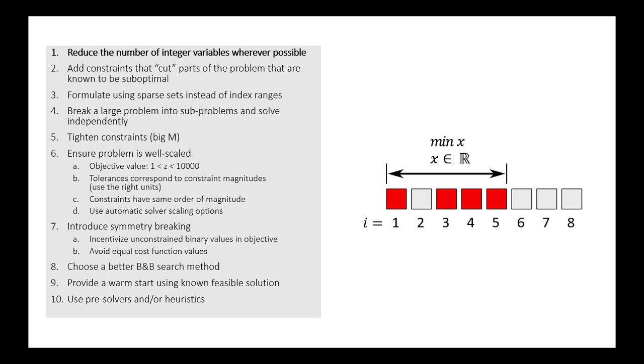So now let's move on to examples of how to actually reduce the complexity or solution time of your mixed integer problem. The first one we'll talk about is maybe the most obvious one, which is integer problems are computationally expensive because every time you evaluate a node, you have to solve a linear problem for all of the relaxed or continuous variables in the formulation.